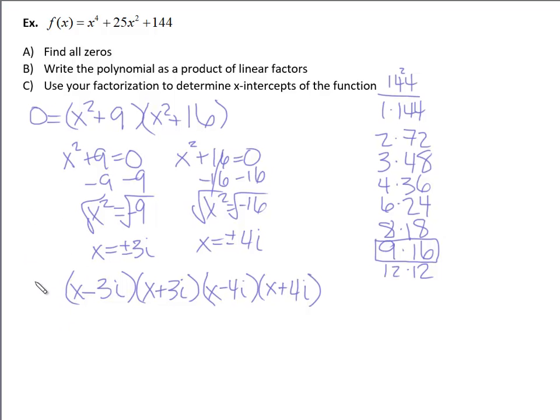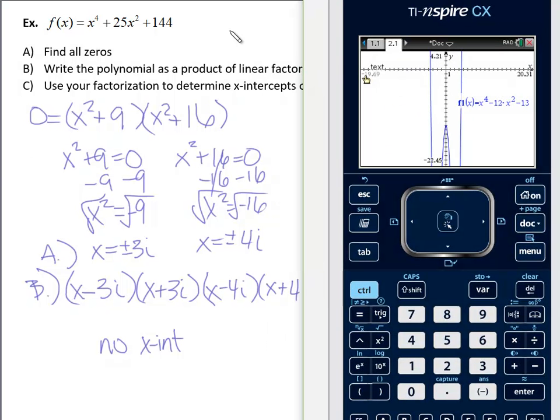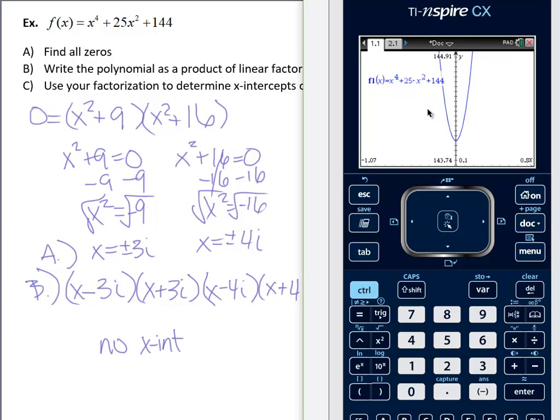And these are our four linear factors. So this would be for part b. We found all of our linear factors. This would have been part a. We found all the zeros here. And then c. Use your factorization to determine the x-intercepts of this function. Well because all of my zeros are imaginary, there is no x-intercept. And that graph, we know because it's even, the two tail ends are going the same direction. And that leading coefficient of 1 tells me they're both going up.